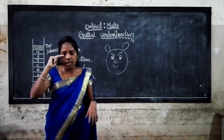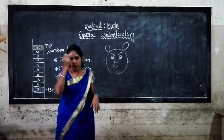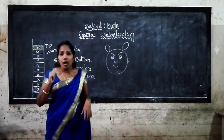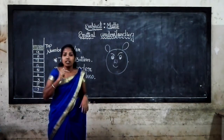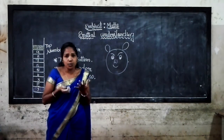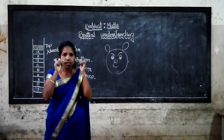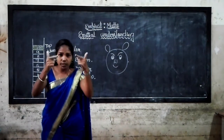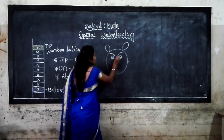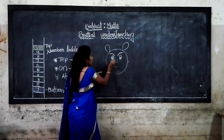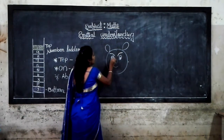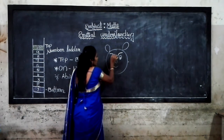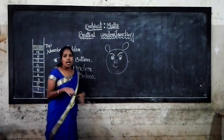Eyes are above the nose, and mouth is below the nose. Now what about the eyebrows? Eyebrows are above the eyes. Where are the eyes? Eyes are below the eyebrows.